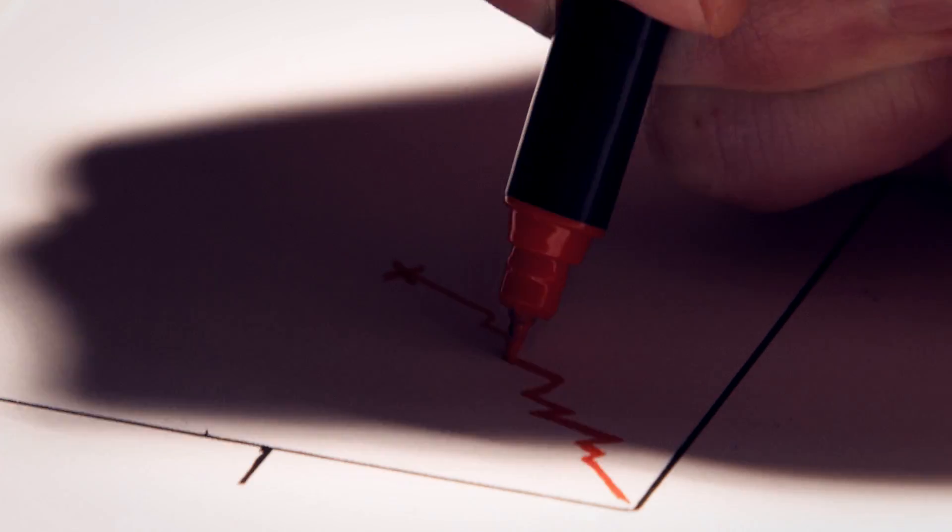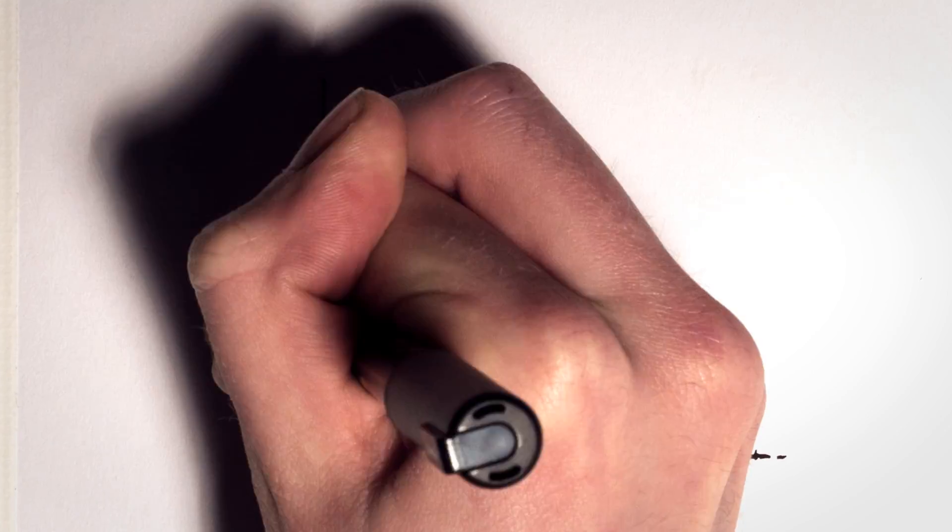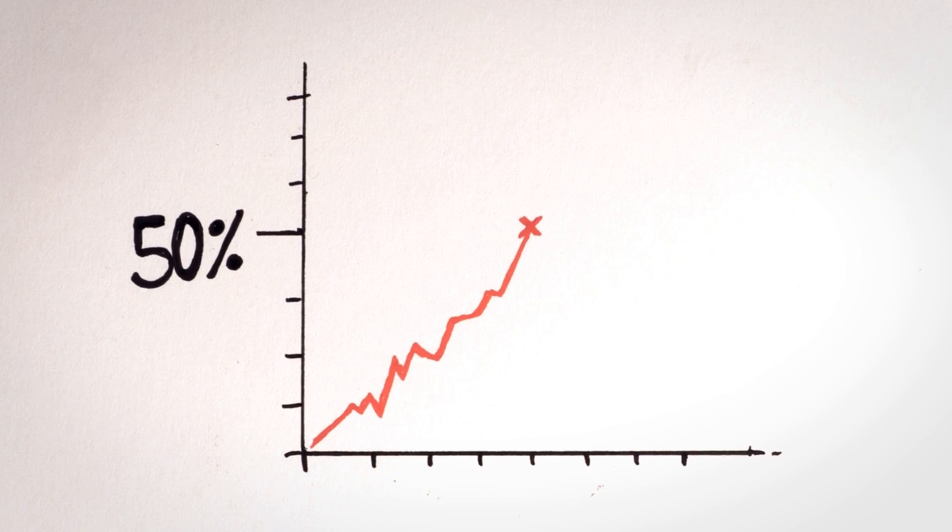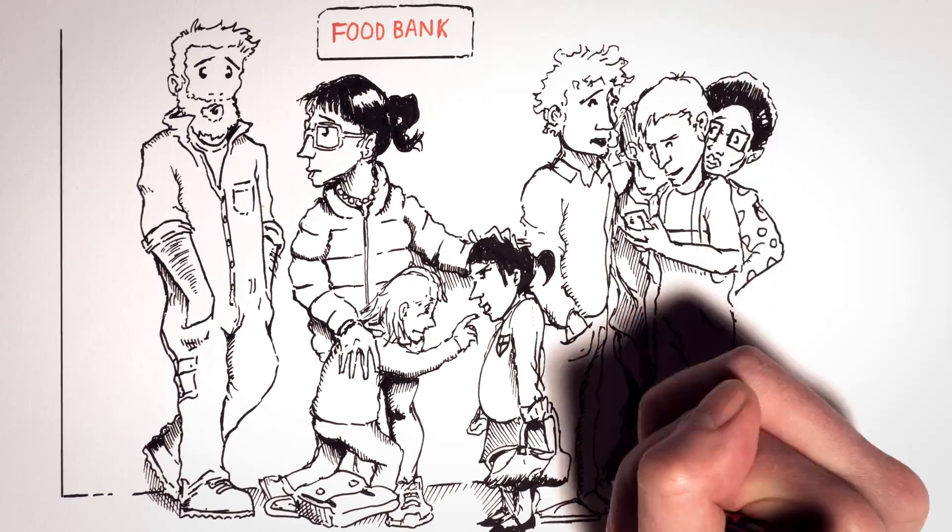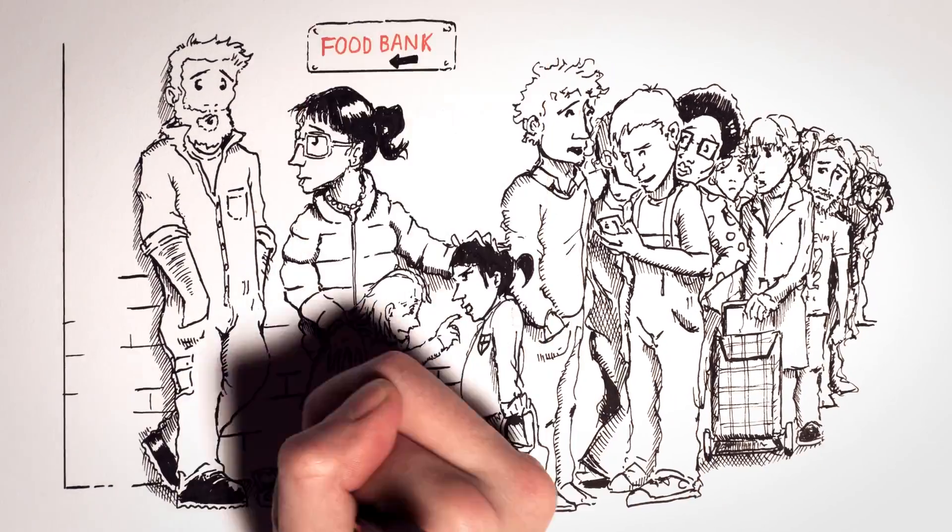Under the coalition government, the number of workers earning less than a living wage has risen by more than 50%. And as a result, 20% of young workers on minimum wage have had to use a food bank over the past year.